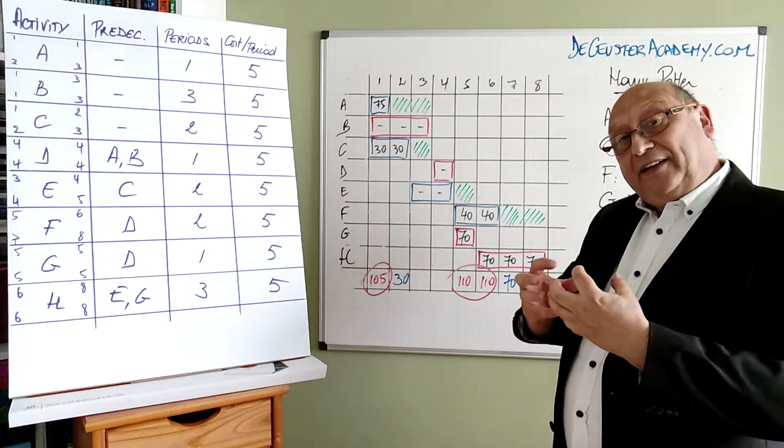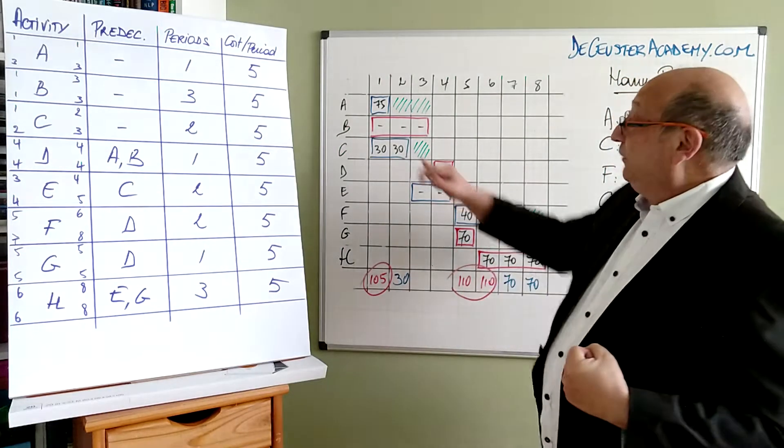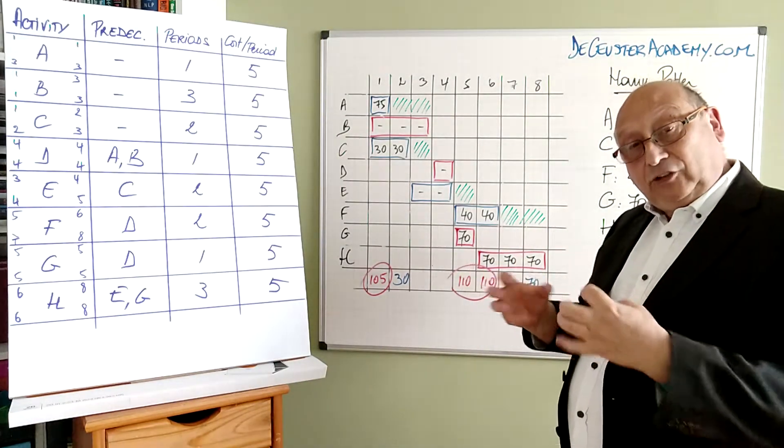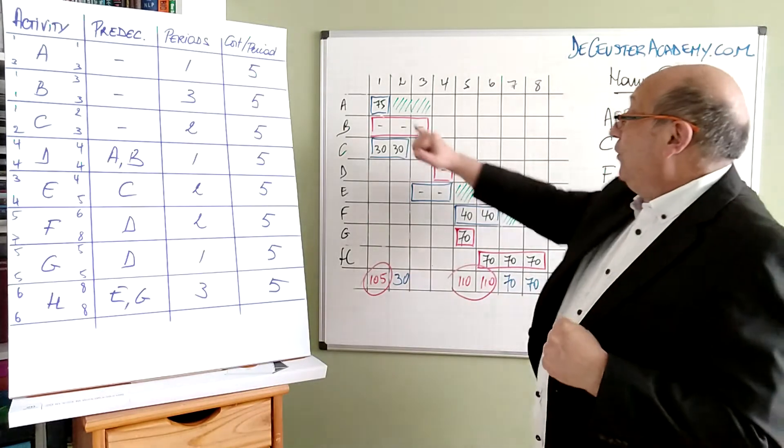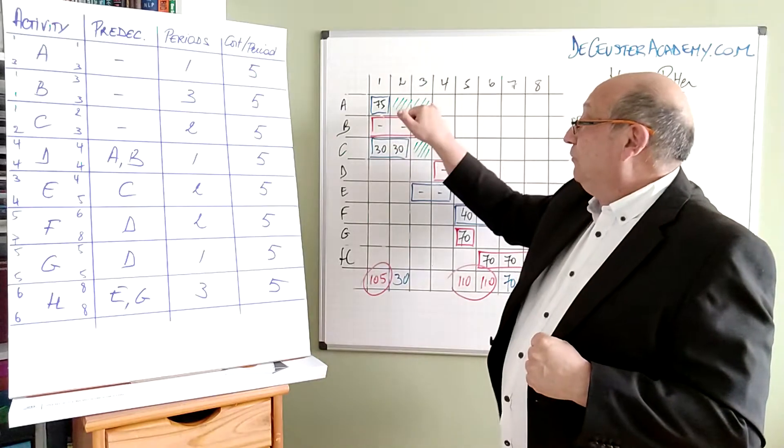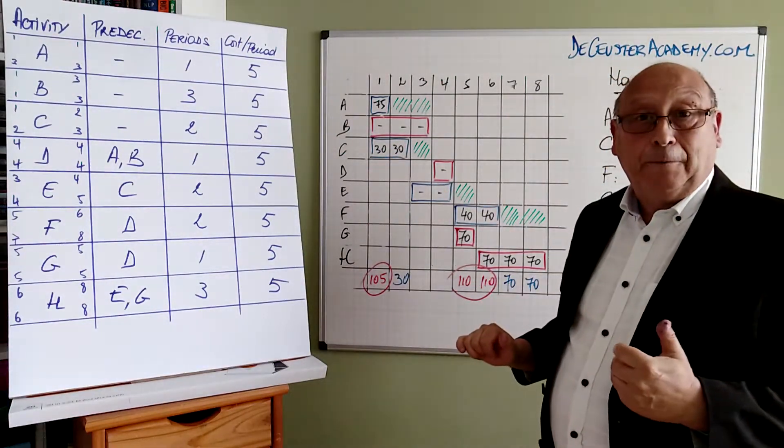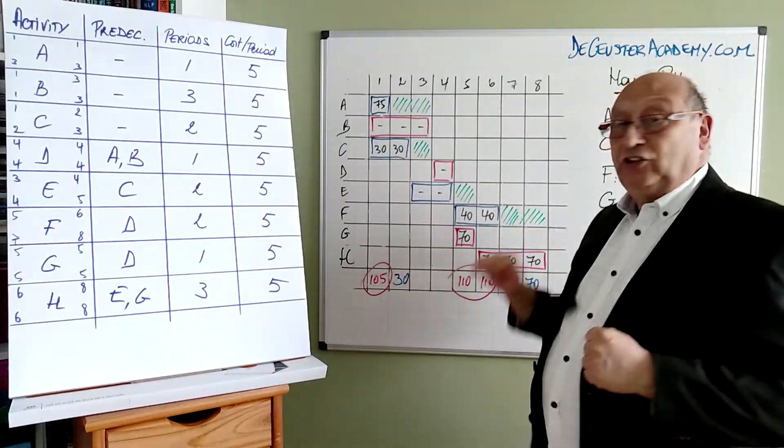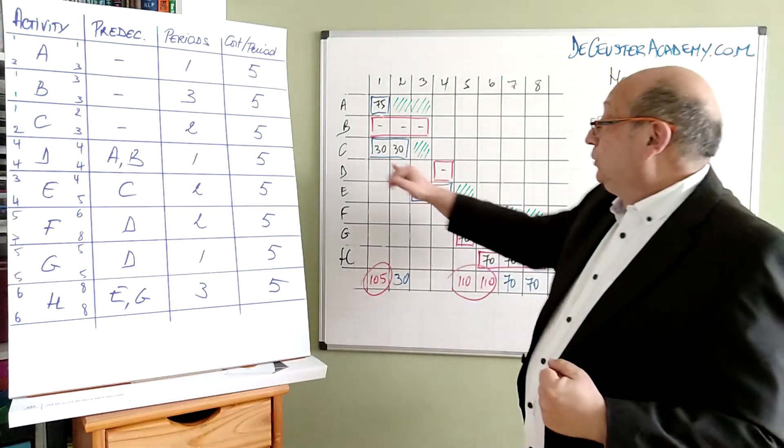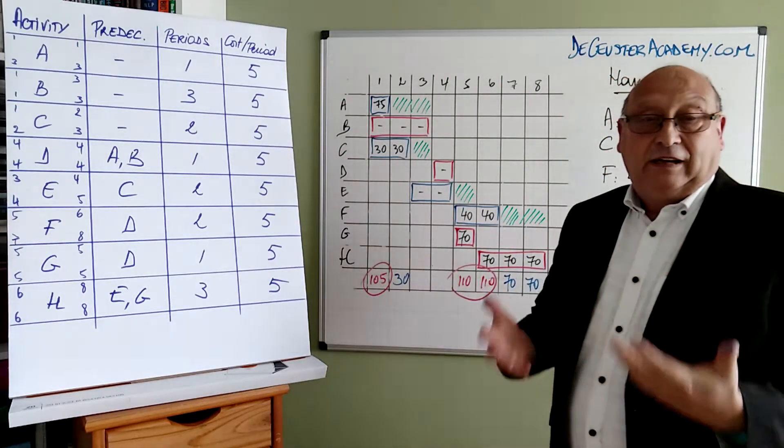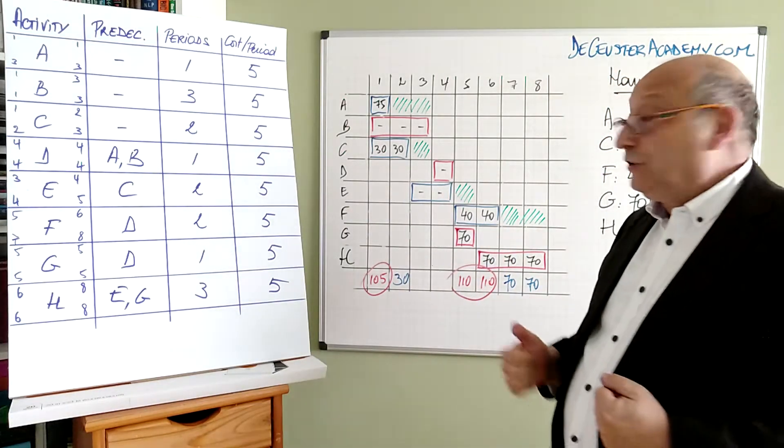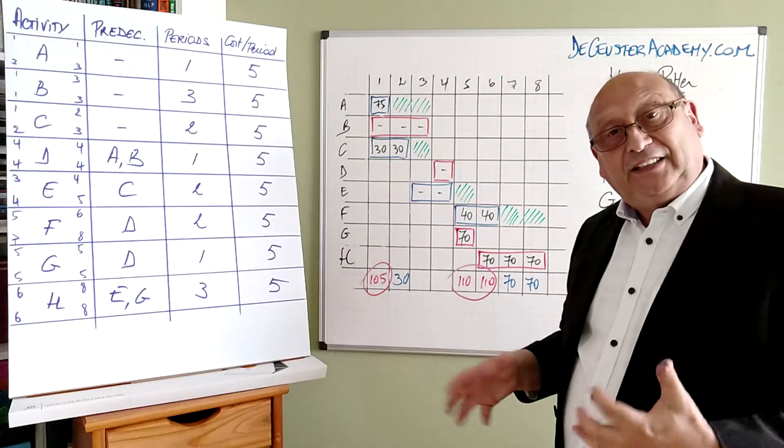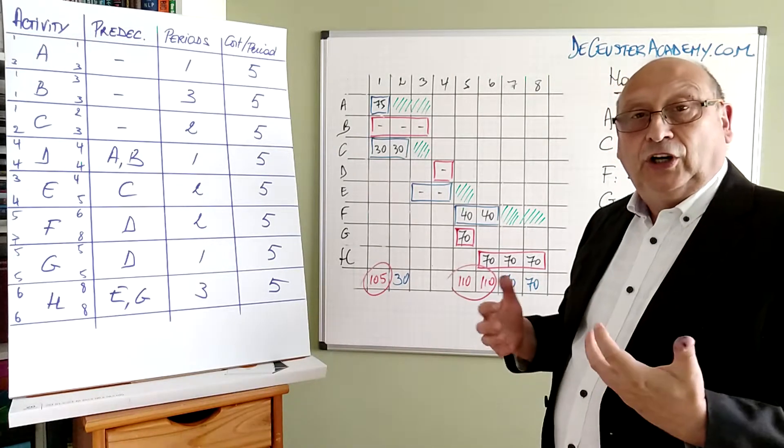Another thing we can do is we can expand activity A. So we have 75% that Harry is working on activity A when we have one period. When we extend that activity, for example, to three periods, we have 25, 25 and 25. And then we don't have a problem here anymore. We can do the same thing here. We can expand this C over three periods instead of two periods, which would bring the activity of Harry Potter from 30 to 20%. So here we have a lot of different possibilities that we can use to resolve the resource problem.